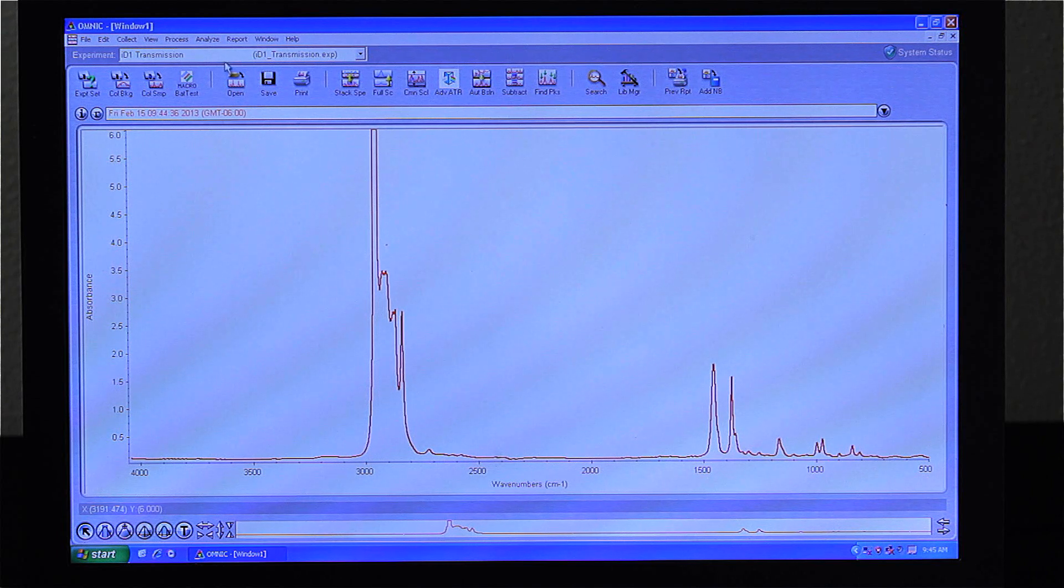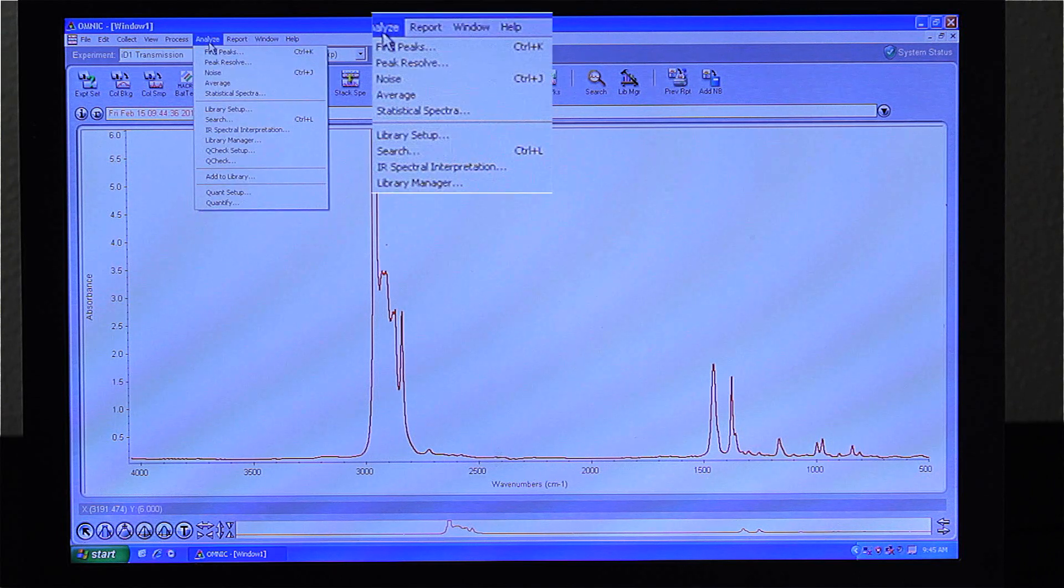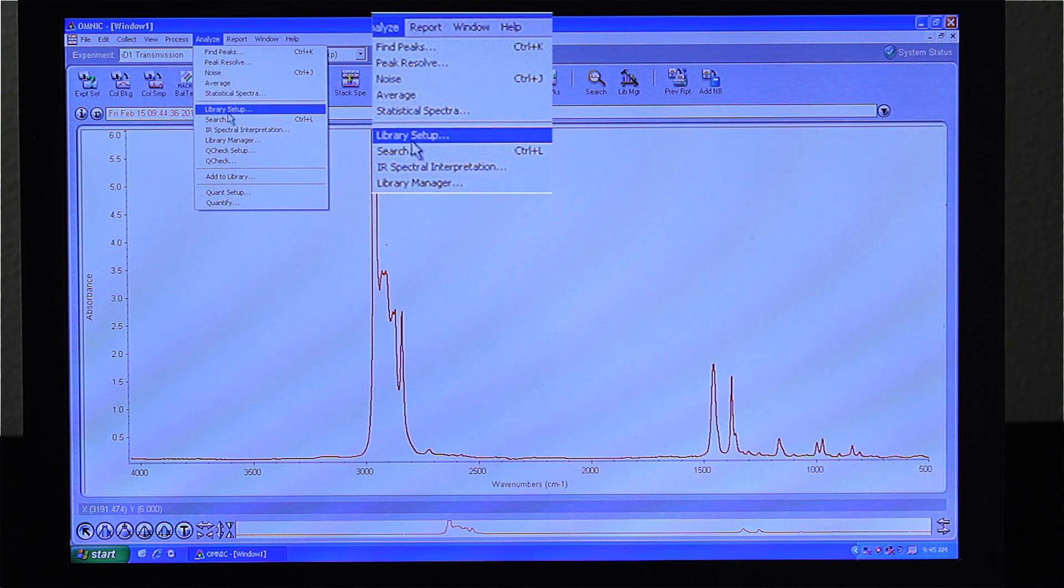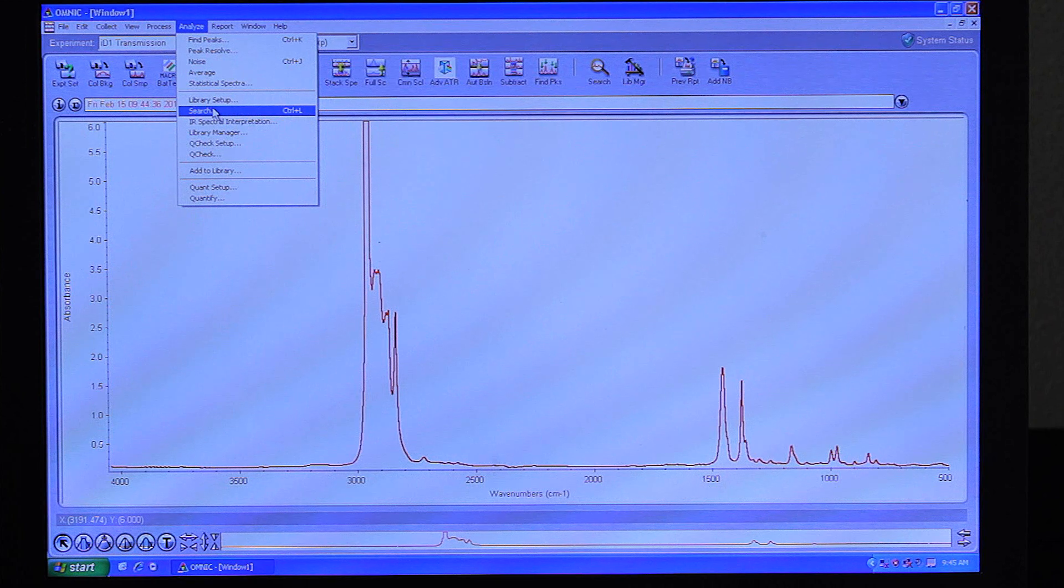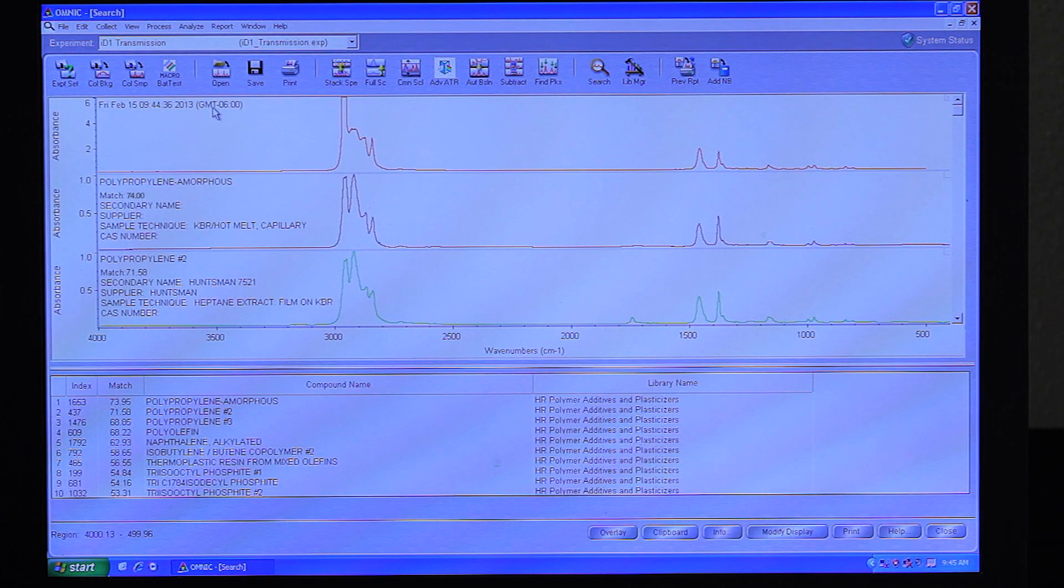To do a library search, you go up to Analyze, go under where it says Library Setup, and then hit Search. Our libraries will tell you what the best match is for this particular spectrum. We can then be fairly sure that our material is actually polypropylene.